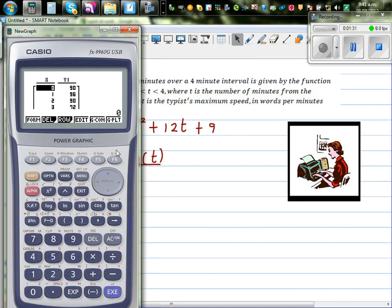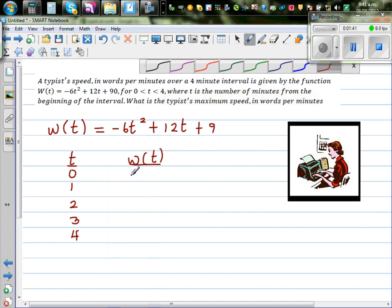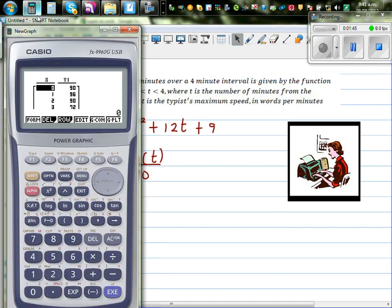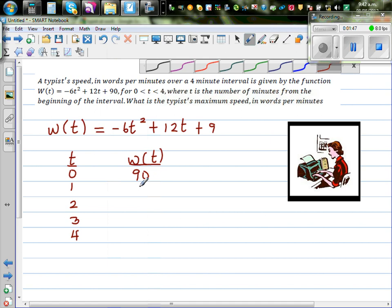So you start at 90, then 96, then 90, 72. So it's 90, 96, 90, 72. So you start at 90. Then you reach, I keep forgetting, 96. Then you come back at 90 and then you're coming back to 72.